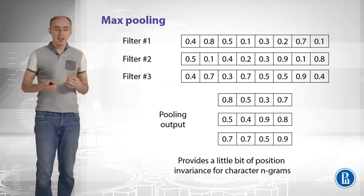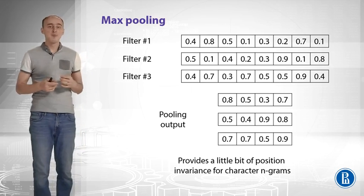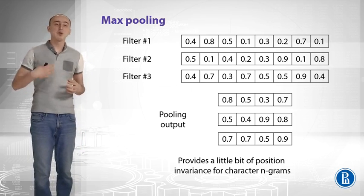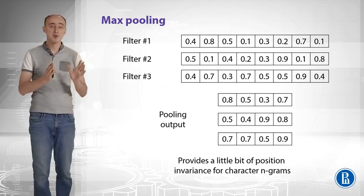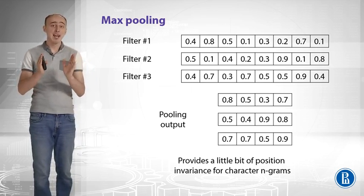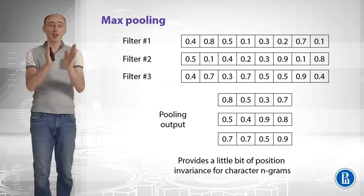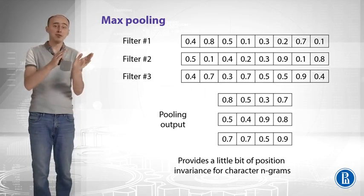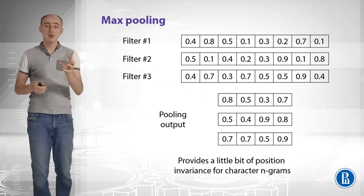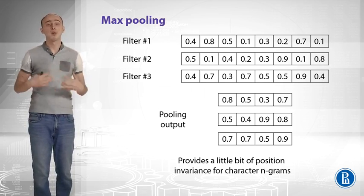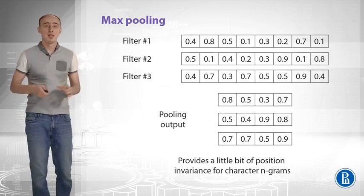Why do we need pooling? It actually introduces a little bit of position invariance to our character n-grams. So, if that character n-gram slides like one character to the left or to the right, there is a high chance that thanks to pooling, the activation in that pooling output will stay the same.